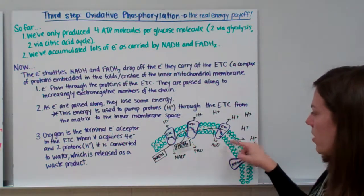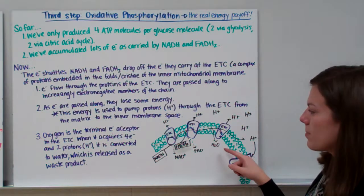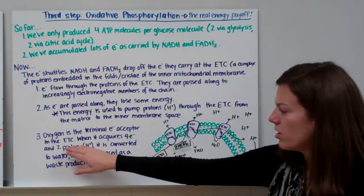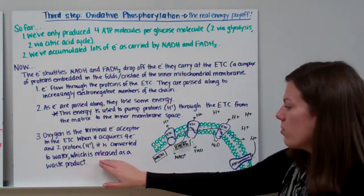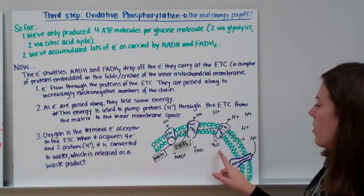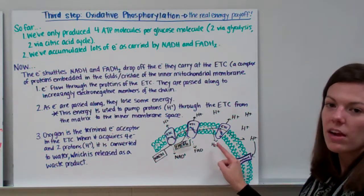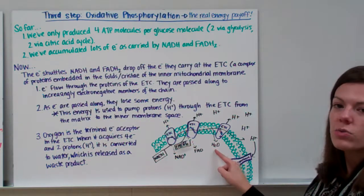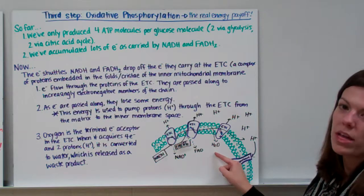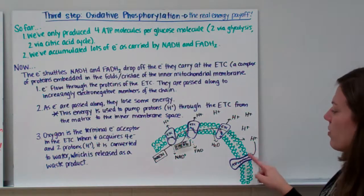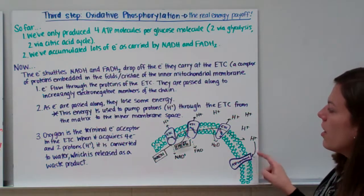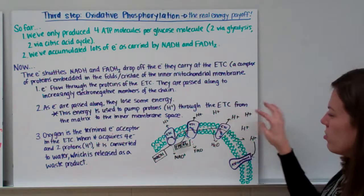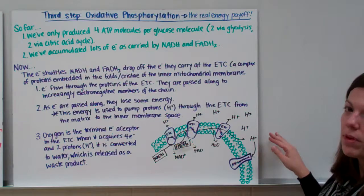Oxygen is the terminal electron acceptor. When oxygen acquires four electrons and two protons, it is converted to water, which is released as a waste product. Pay attention: we have one last protein we're going to use through oxidative phosphorylation, and we're going to do something with all these hydrogens that have built up outside.